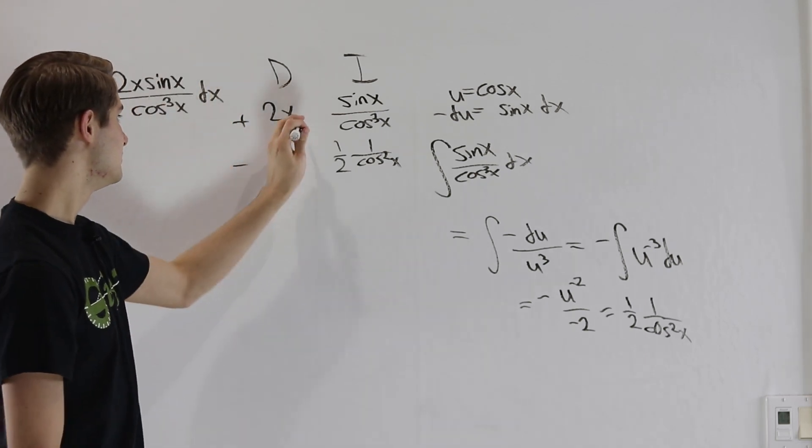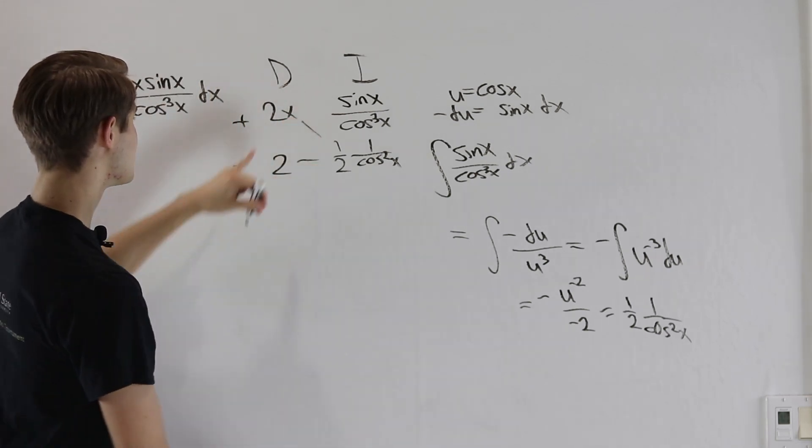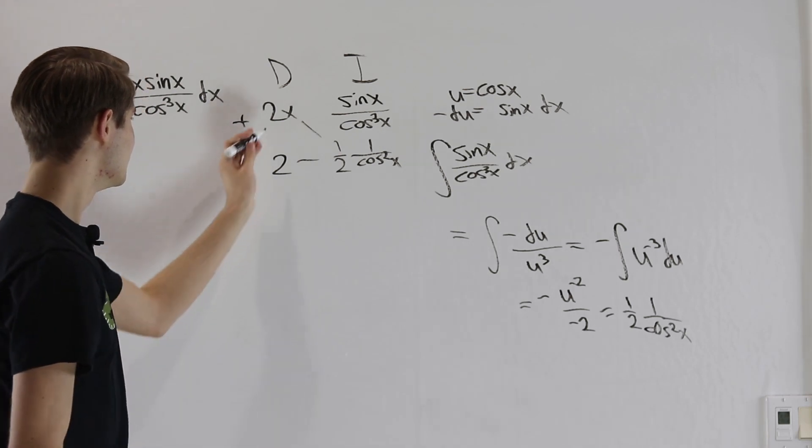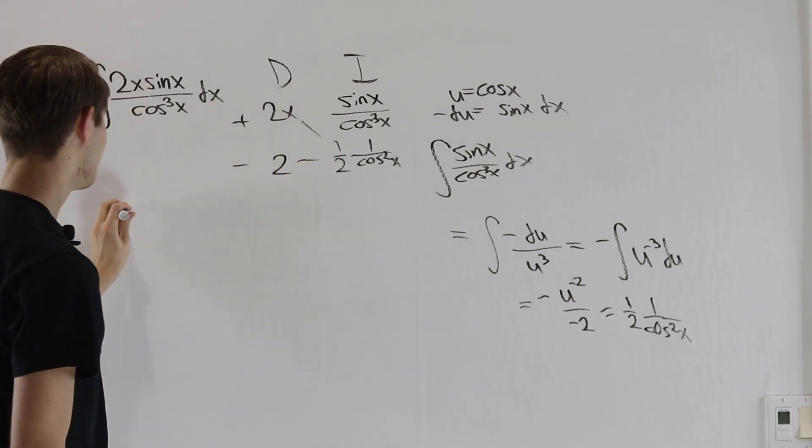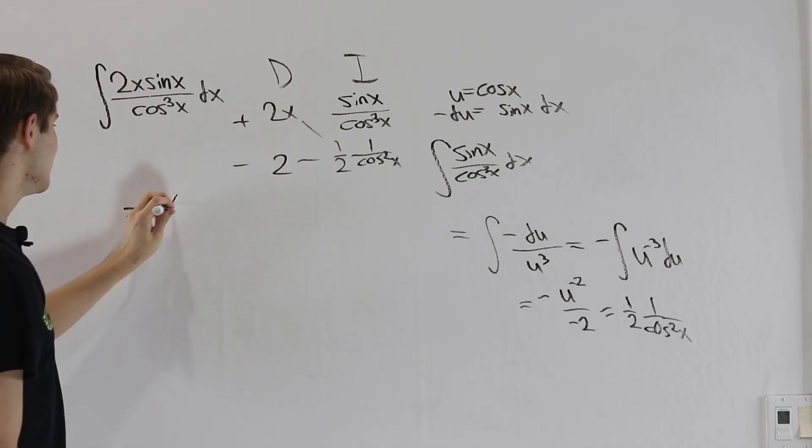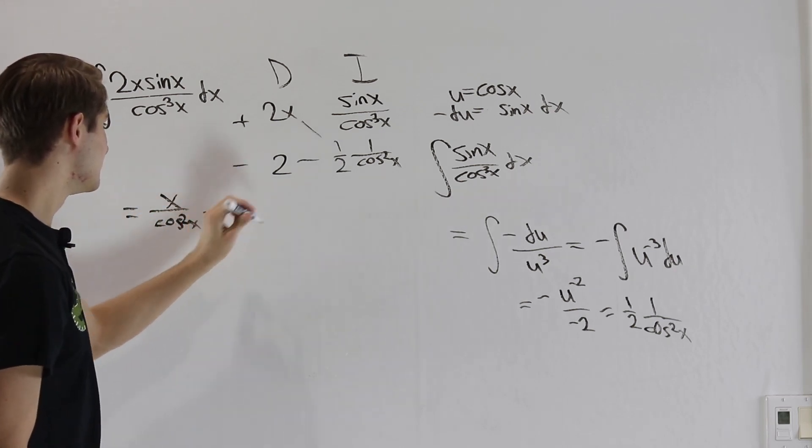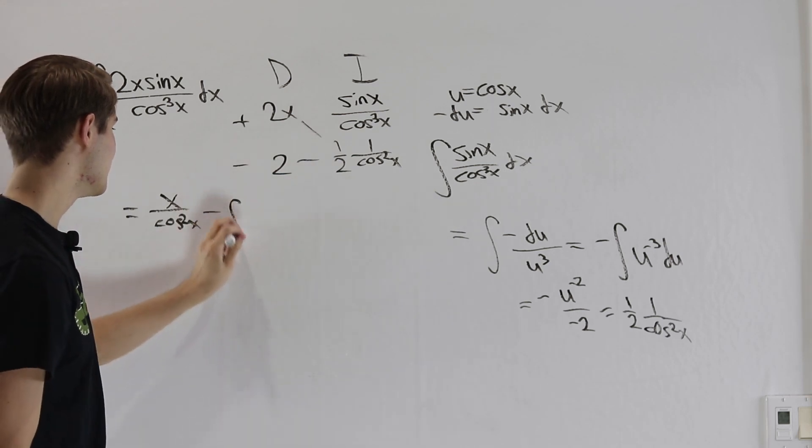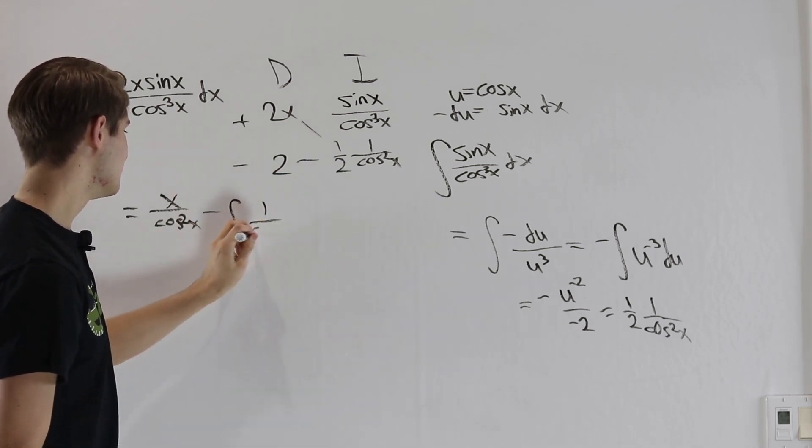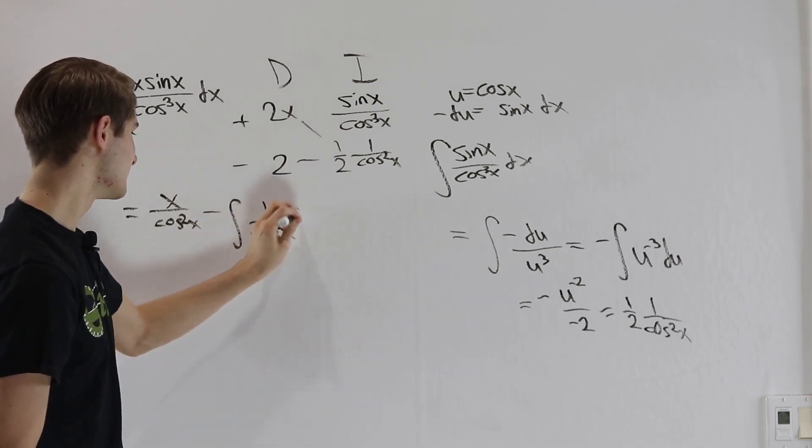Now we can plug all of this into the DI setup. So first we're going to have 2x times this. Notice the 2 and the 1 half are going to cancel out. So we will just get x over cosine squared x. And then we'll have minus, 2 times 1 half is again going to go away, we have the integral of 1 over cosine squared x dx.